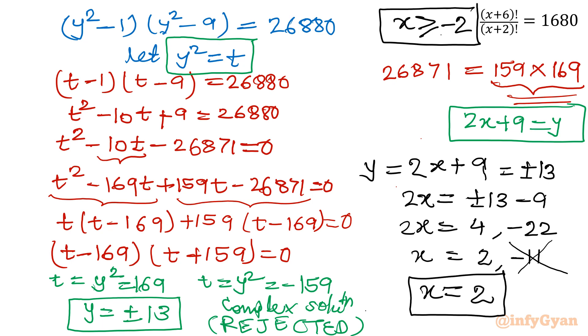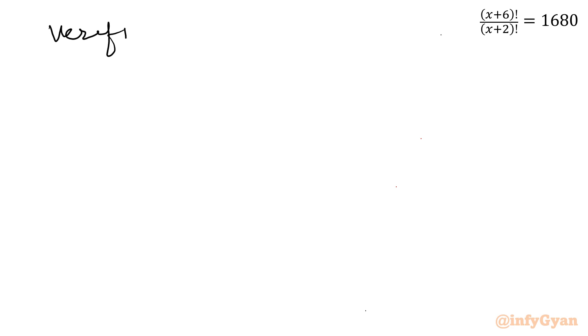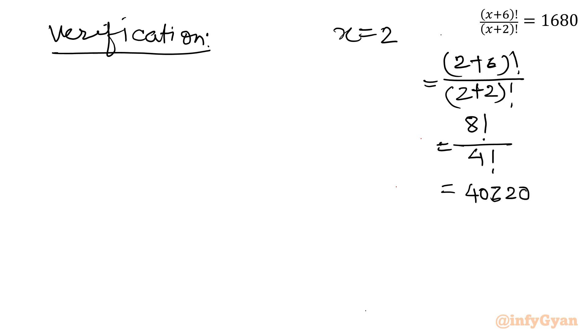Let's verify x is equal to 2. Verification: I will write x is equal to 2, let's put over there. So I will write (2+6)! = 8! over (2+2)! = 4!. What is 8!? 40,320. 7! is 5040 times 8 so it would be 40,320 divided by 4! which is 24. Once you will divide you will get 1680 which is our RHS. That means x is equal to 2 is the correct solution.